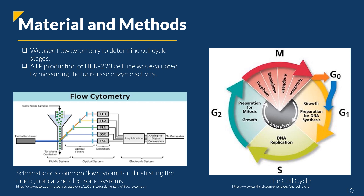We used flow cytometry to determine cell cycle stages. Moreover, ATP production of the HEC-293 cell line was evaluated by measuring the luciferase enzyme activity.